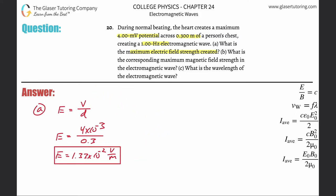Letter B: What is the corresponding maximum magnetic field strength in the electromagnetic wave? We need a formula that relates electric field with magnetic field. The electric field divided by the magnetic field is equal to the speed of light. To solve for the magnetic field, just simply cross multiply.